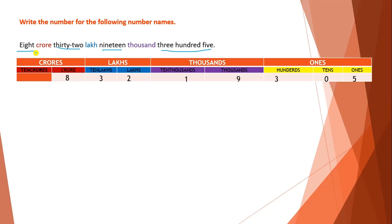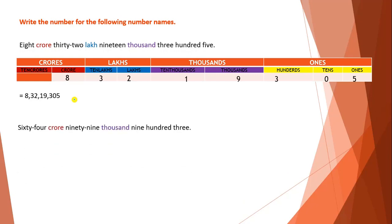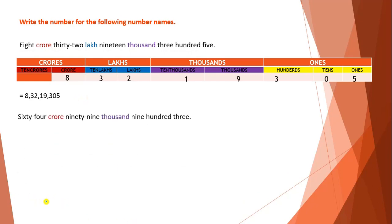After this, we will write all the digits with the help of commas according to periods. Here is the answer: we wrote 305 in the Ones period, then a comma, then 19 in the Thousands period, then a comma, then 32 in the Lakhs period, then a comma, and last we have 8. This way we will convert a given word form of a number to figures. Let's take one more problem.